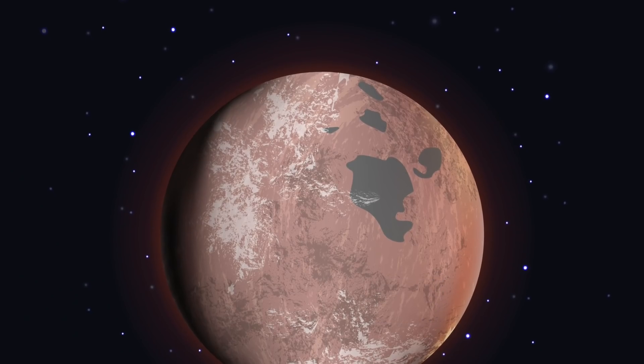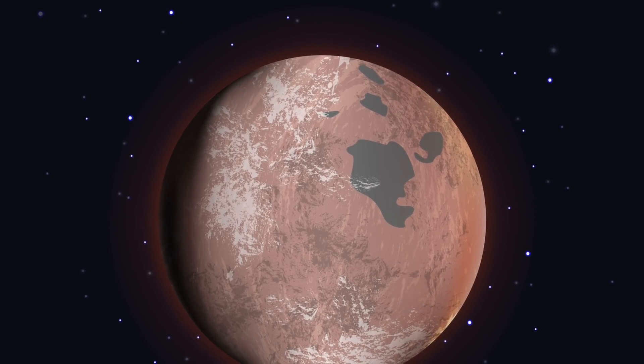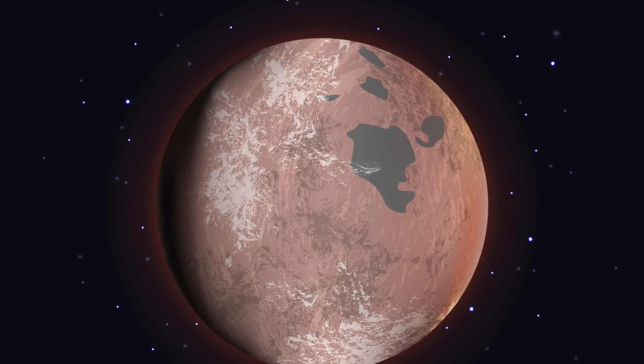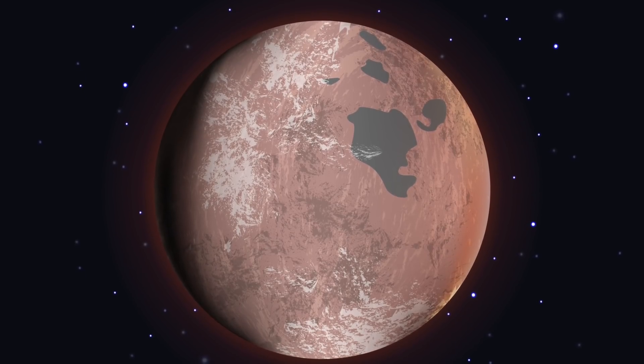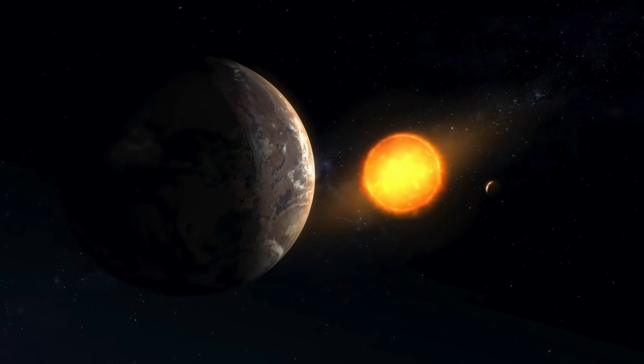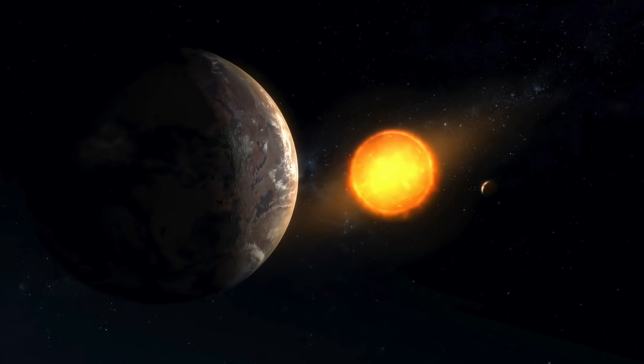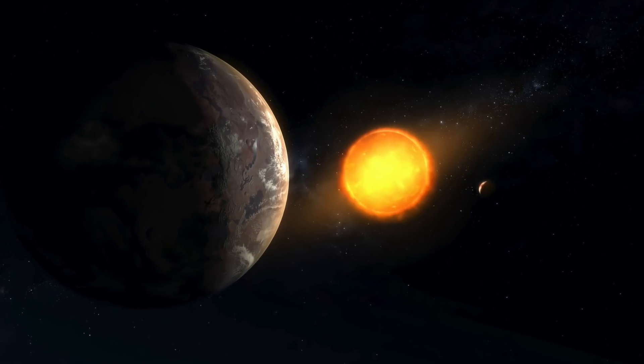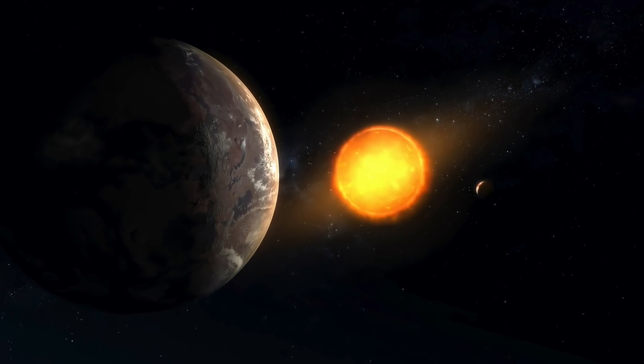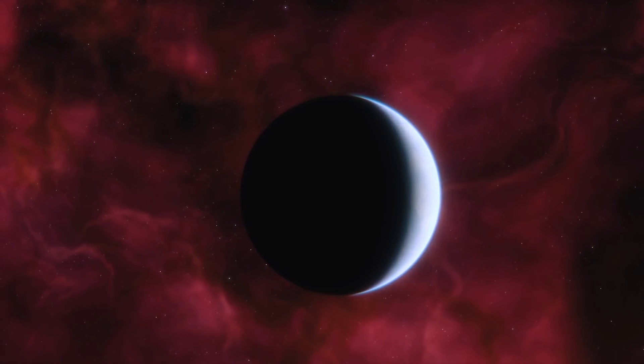This was the planet Kepler 1649c, which is located about 300 light years away from our Earth. Within its orbit, Kepler 1649c orbits a rather faint red dwarf. The so-called red dwarfs are relatively small stars that are so faint that they cannot be seen with the naked eye from our home planet.